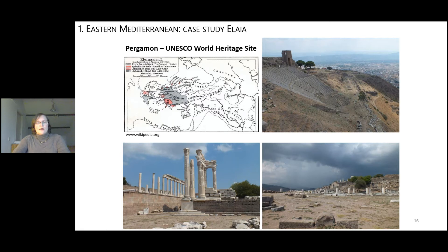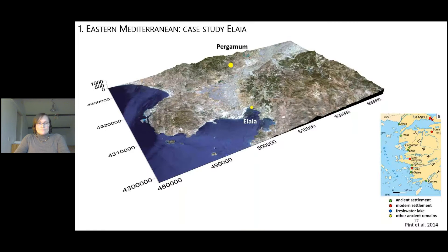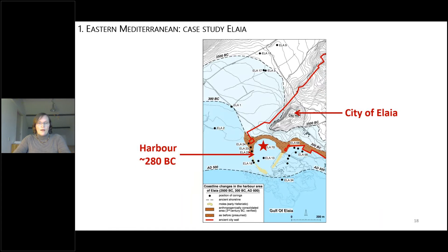Pergamon is a UNESCO World Heritage Site and was the capital of the Kingdom of Pergamon in antiquity — a fantastic place to visit. Pergamon was located on hills, and like almost all important cities in antiquity, it had a harbor. That harbor is Elaia, where we did our investigation. The harbor was built in 280 BC. This was a project led by Helmut Brückner, and Martin Zeiliger made many corings here.